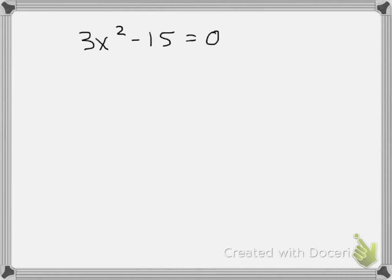So the first thing I'm going to do is I'm going to solve this by the square root property. Which means the first thing I'm going to do is add 15 to both sides. The second thing I'm going to do is I'm going to try to get this x by itself.